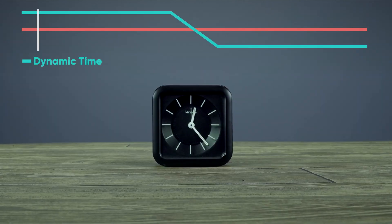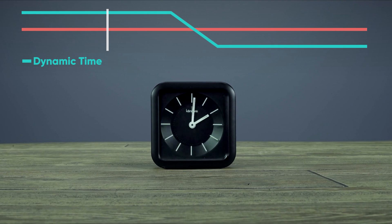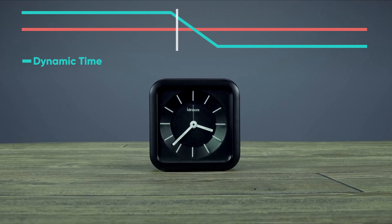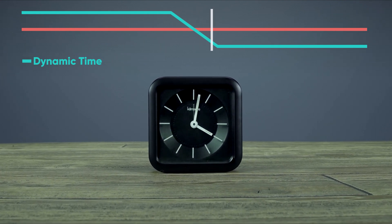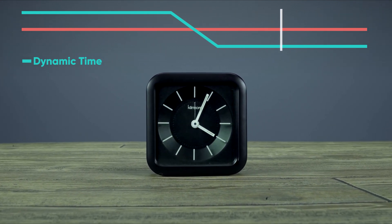And here is the same shot with the dynamic time mode turned on. With dynamic time, you can alter the speed of time without affecting the motion speed of the camera.